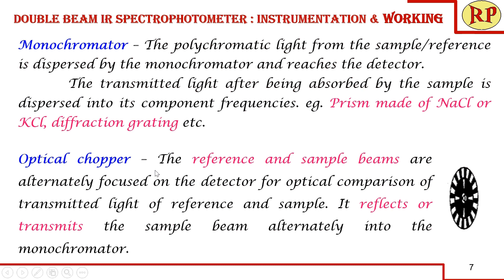The optical chopper alternately focuses the reference and sample beams on the detector for optical comparison of the transmitted light. If the sample beam is reflected, the reference beam is transmitted, and the other way around.